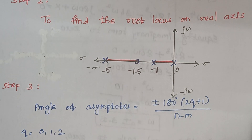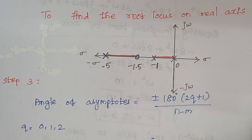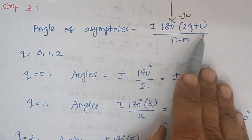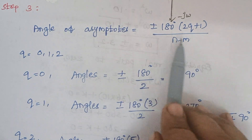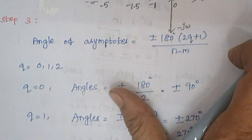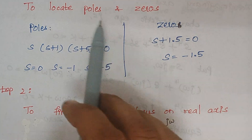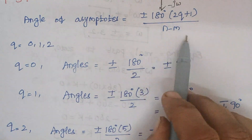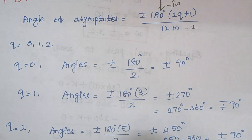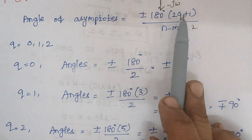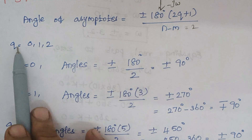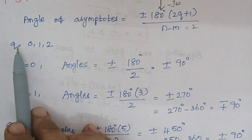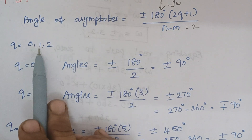Step 3 is calculating the angle of asymptotes. The formula is ±180°(2q+1)/(n−m), where n is the number of poles and m is the number of zeros. Here n = 3 and m = 1, so n−m = 2. We substitute values of q from 0 up to n−m, so q = 0, 1, and 2.